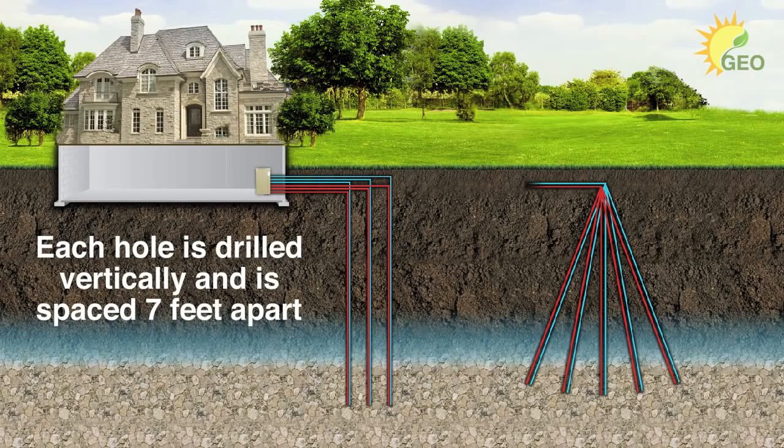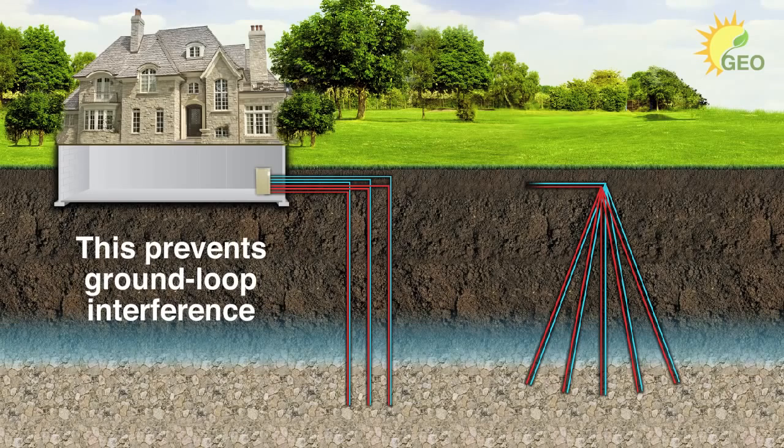Each borehole is drilled vertically and is spaced 7 feet apart. This prevents the phenomenon of ground loop interference.